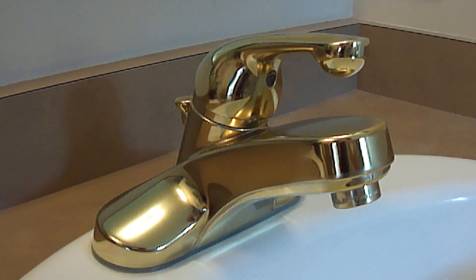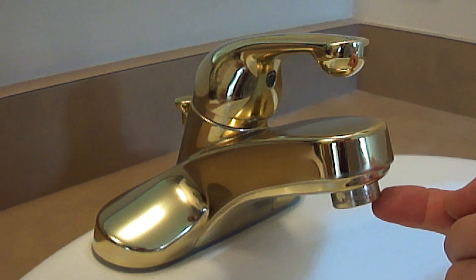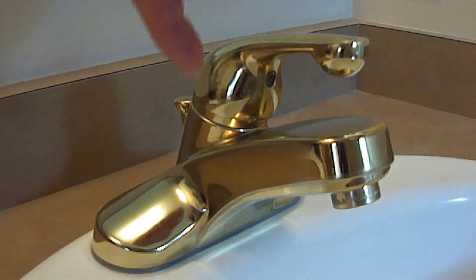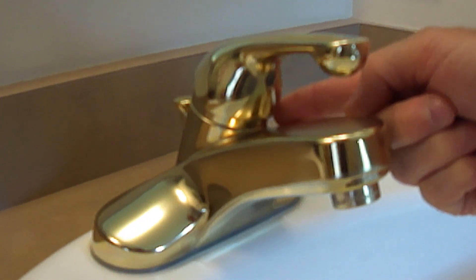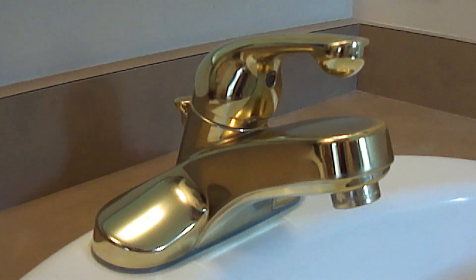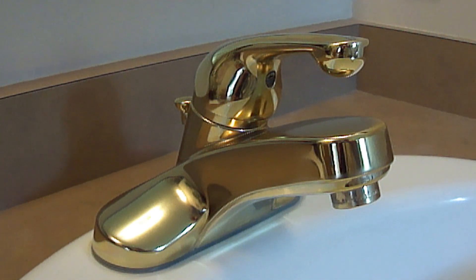If you have a single-handle faucet that's leaking from the spout when it's turned off, or leaking from anywhere around the base of the handle when the faucet is turned off or even when it's turned on, then the washers and springs need to be replaced.